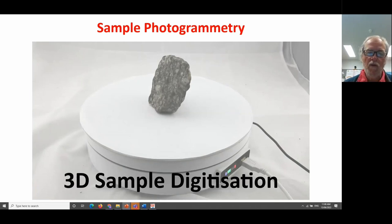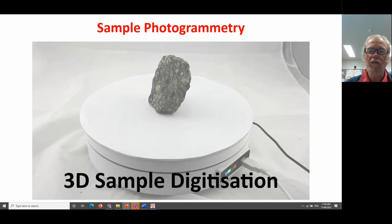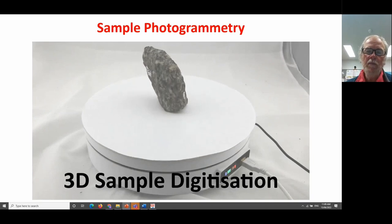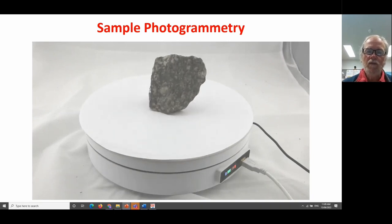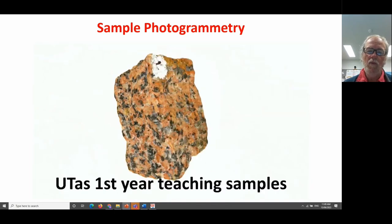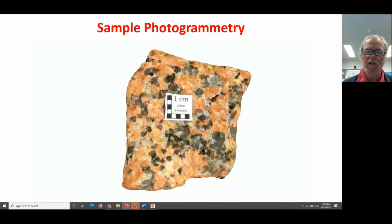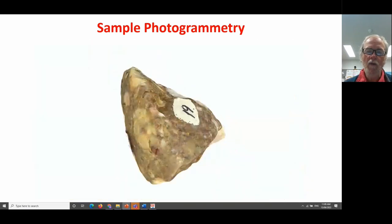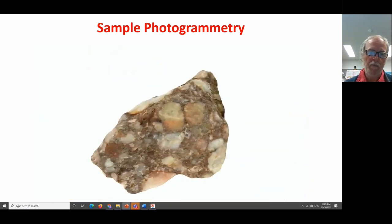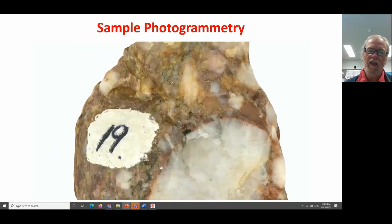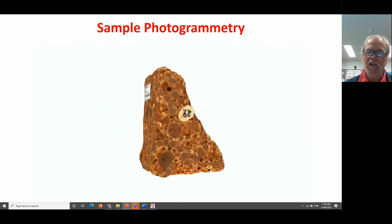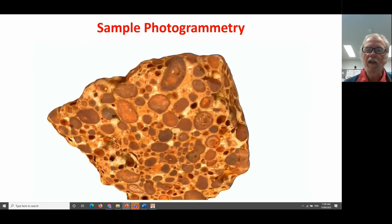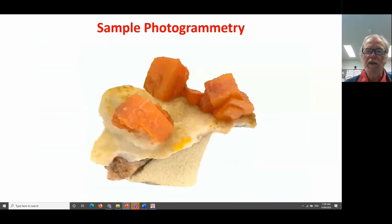We also do this process for samples. We take a sample, put it in a controlled lighting environment on a computer-controlled turntable, take photographs from many orientations, and then build a fully texture-rendered three-dimensional representation of the sample. We've done that here at UTAS for basically our entire teaching collection from first through to third year, and also for a selected range of samples from our research collections.